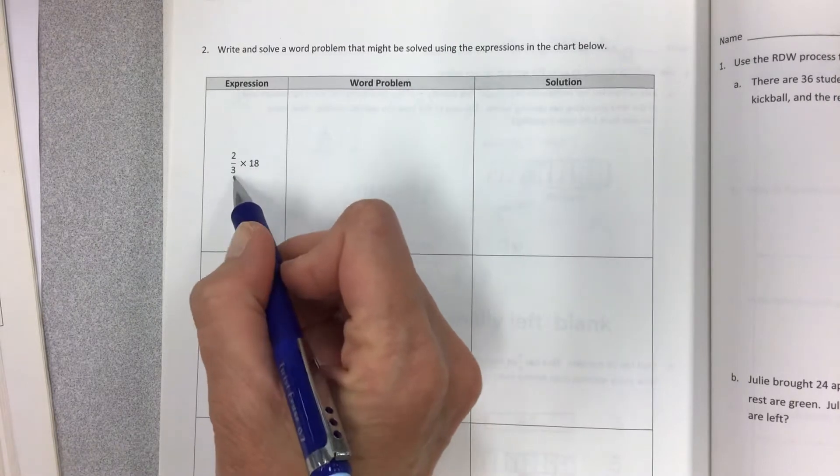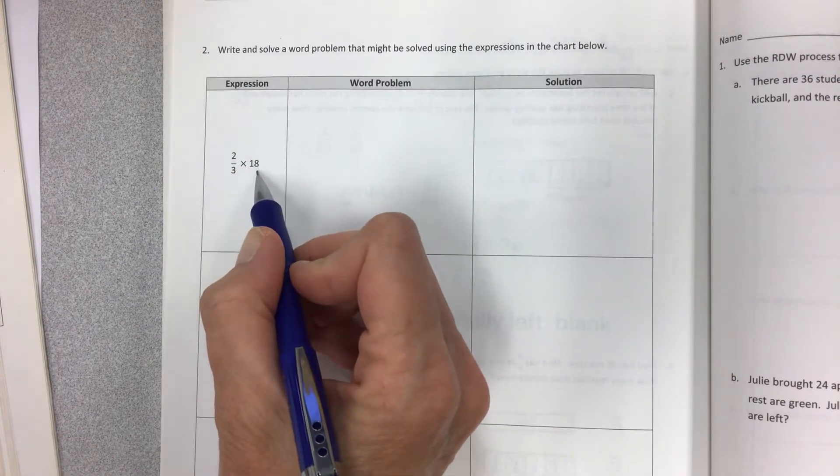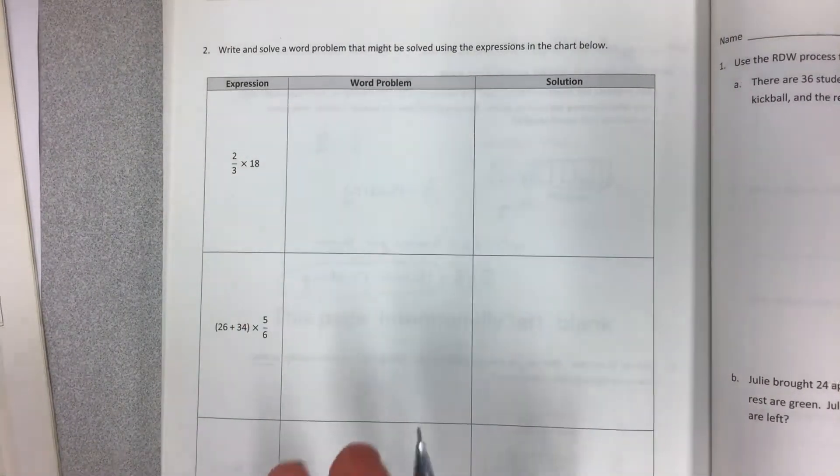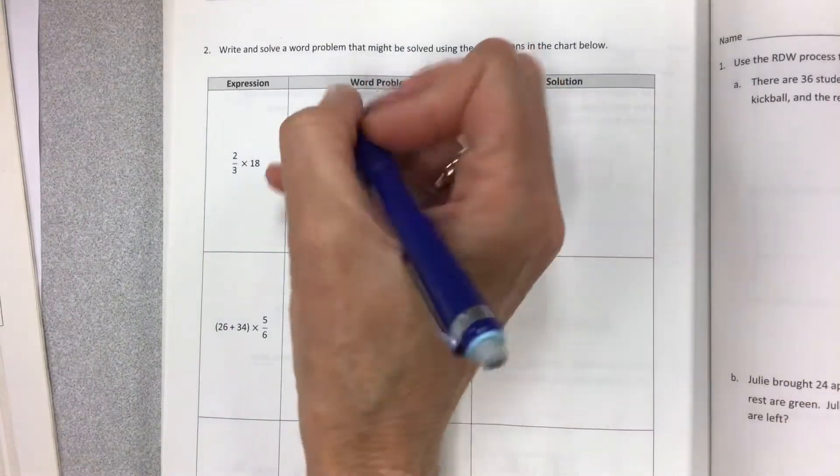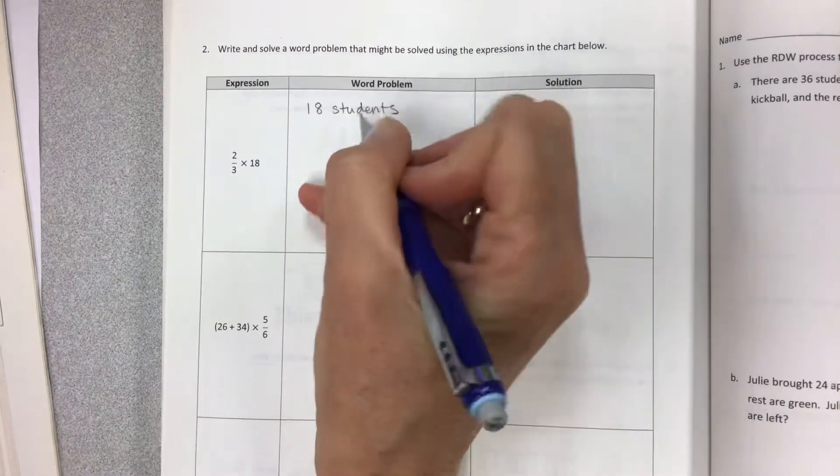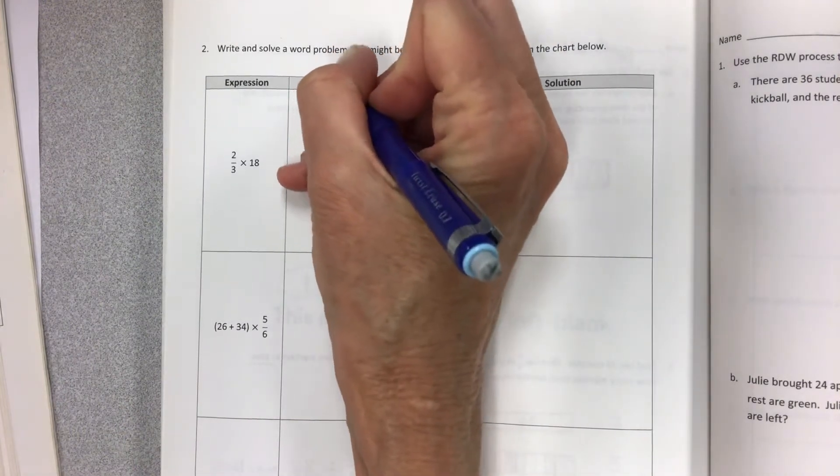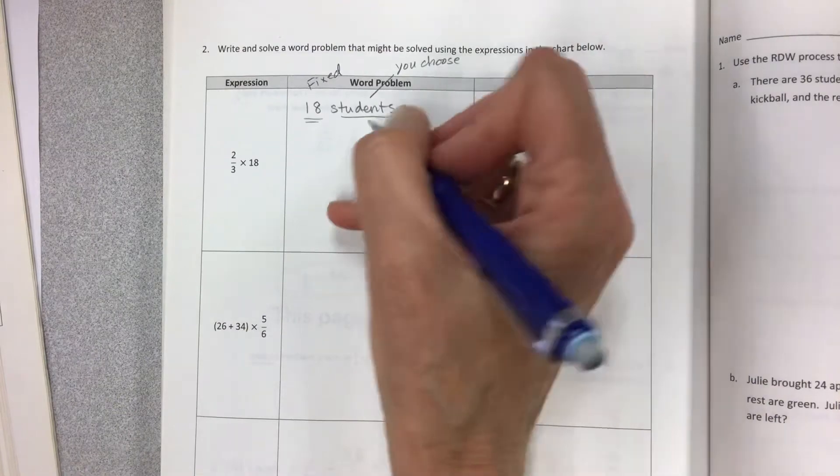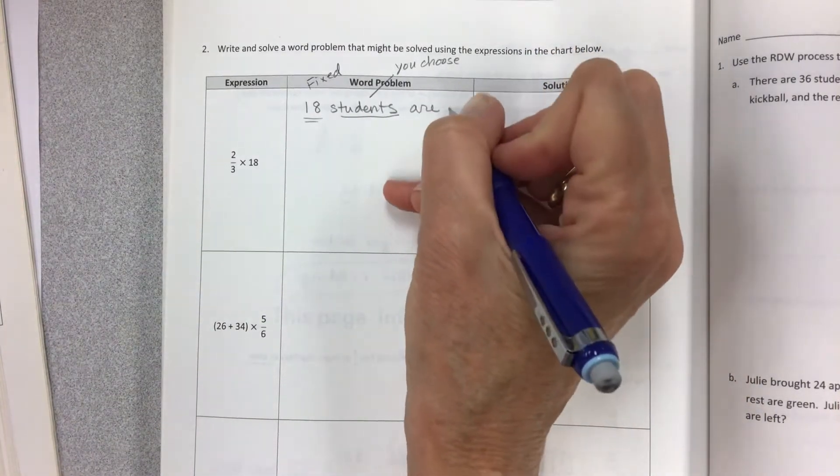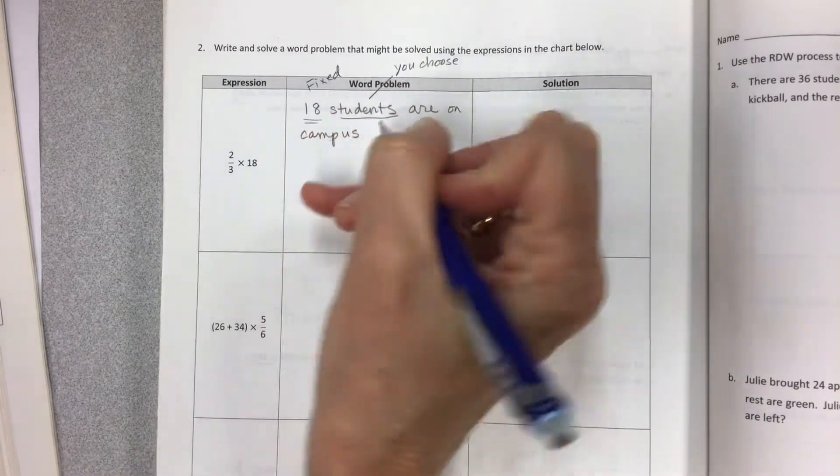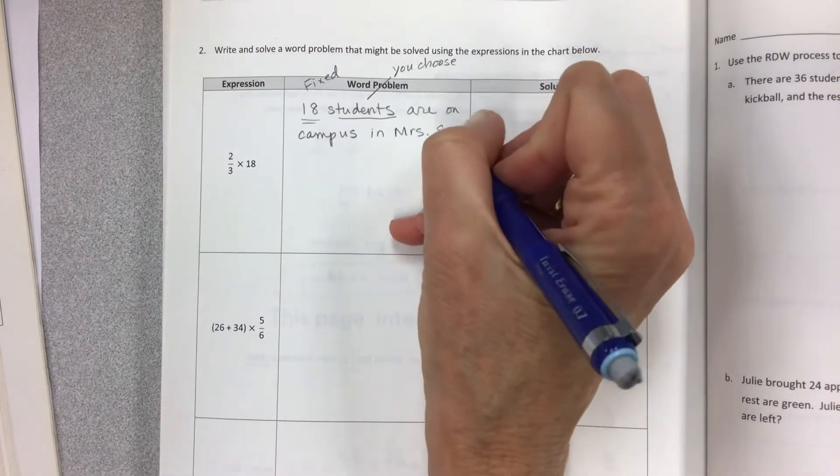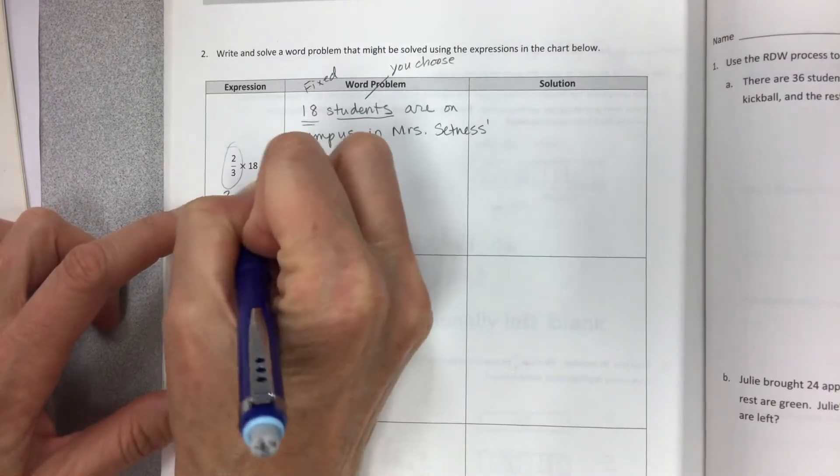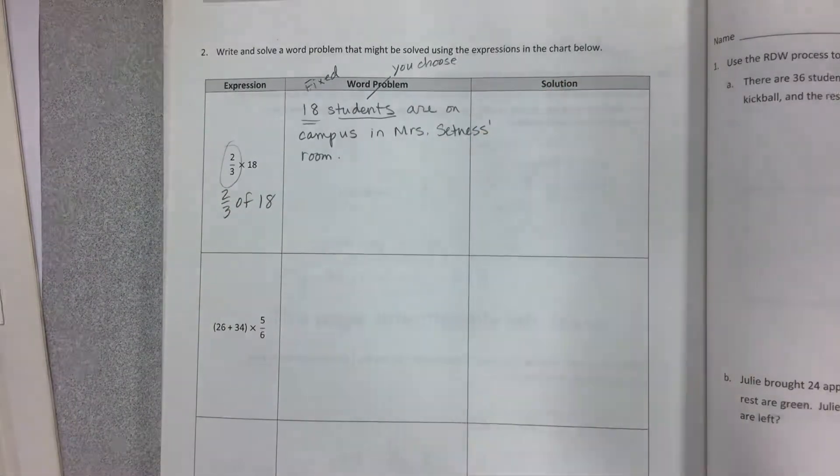First of all, I need a fraction of a number. So 18 is going to be the whole of the set. 18 people, 18 cookies, 18 cars, but two-thirds of which are being selected. If you have something like 18 students are on campus, so they don't get lost. Now when we have this fraction, this is two-thirds of 18. So in your problem that you're writing, you're going to talk about two-thirds of them, of your set, the students.